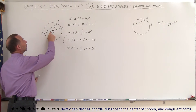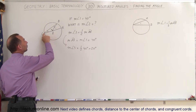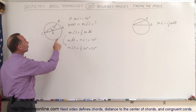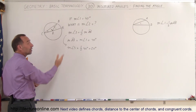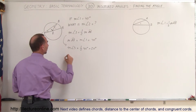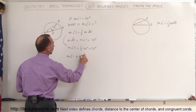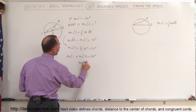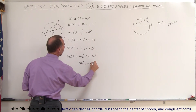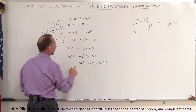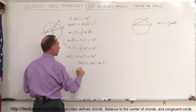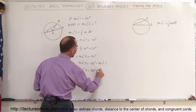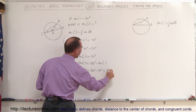We can also find the measure of angle 4, because the line from C to A is the diameter of the circle, which means angle 1 and angle 4 must add up to 180 degrees. So the measure of angle 4 equals 180 degrees minus the measure of angle 1. Since angle 1 is 40 degrees, angle 4 equals 180 minus 40, which is 140 degrees.